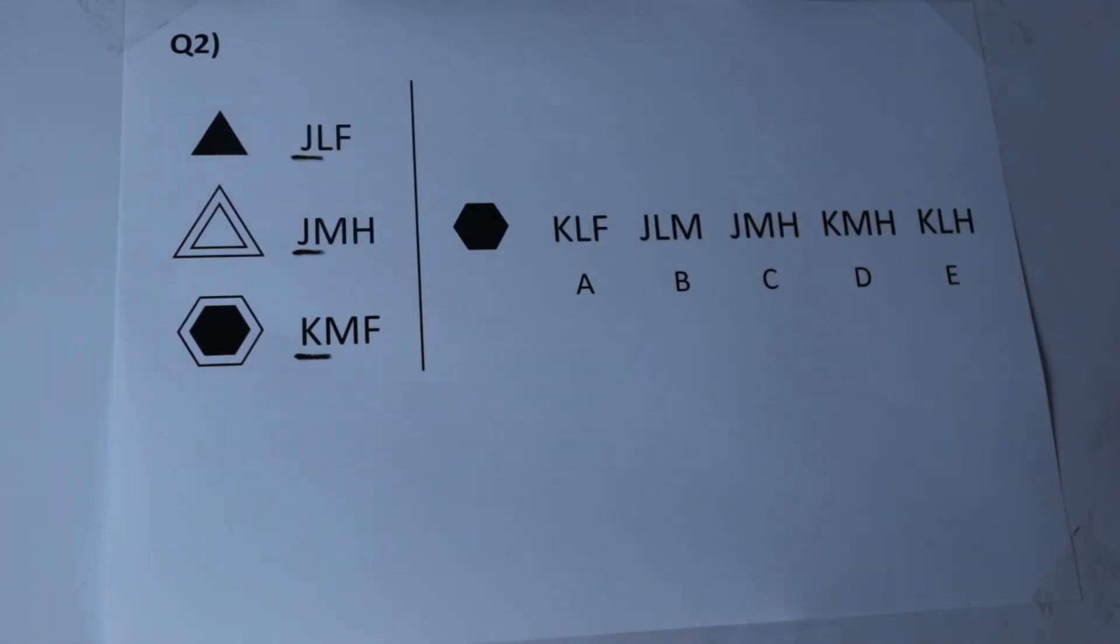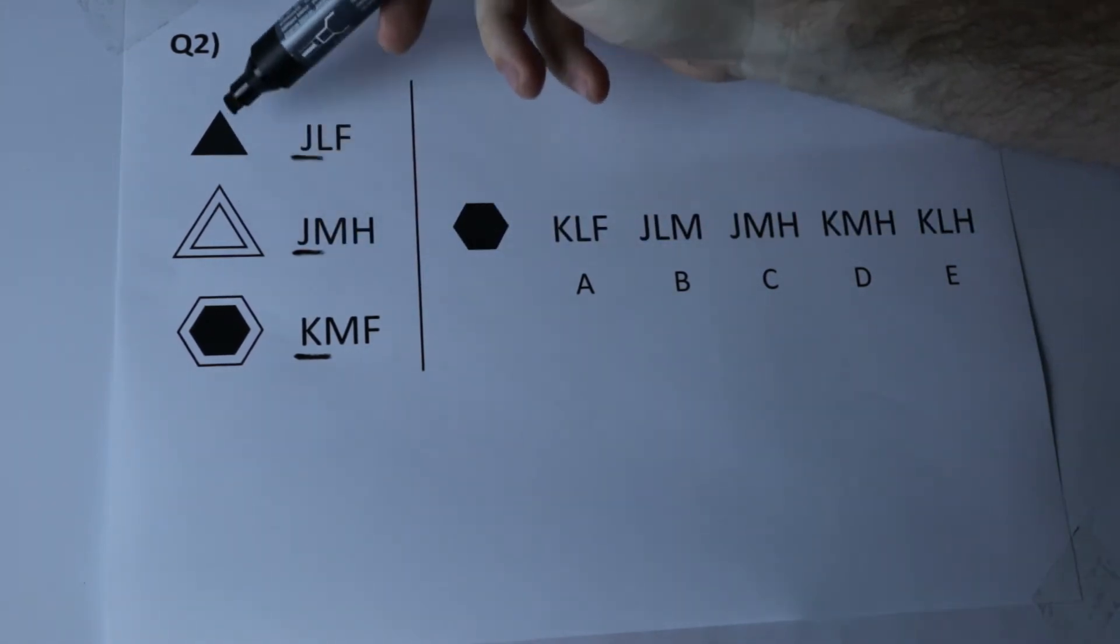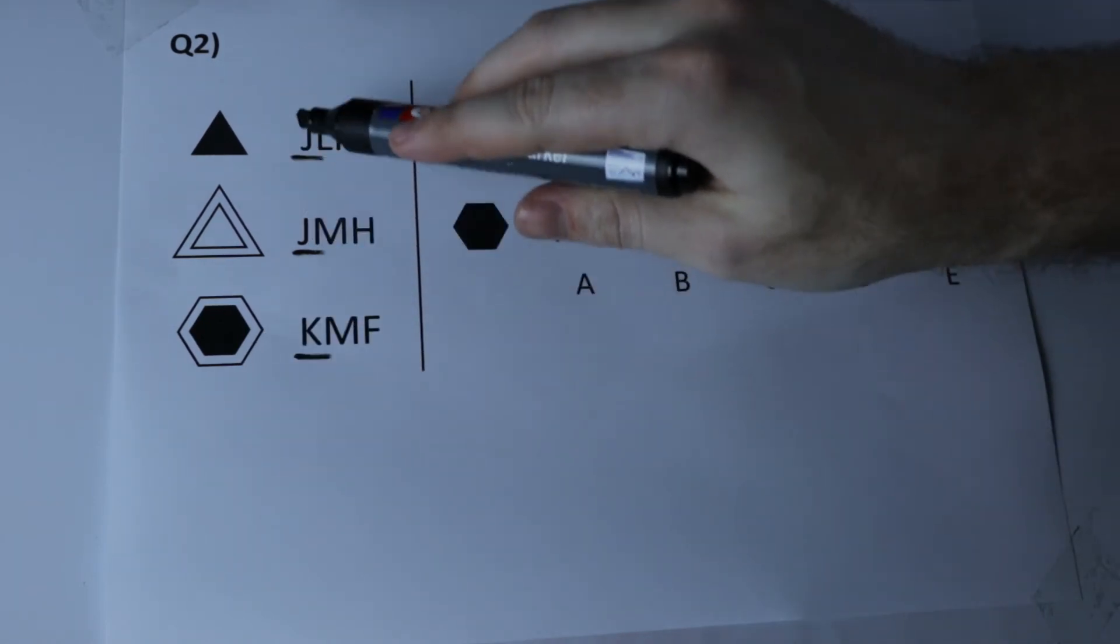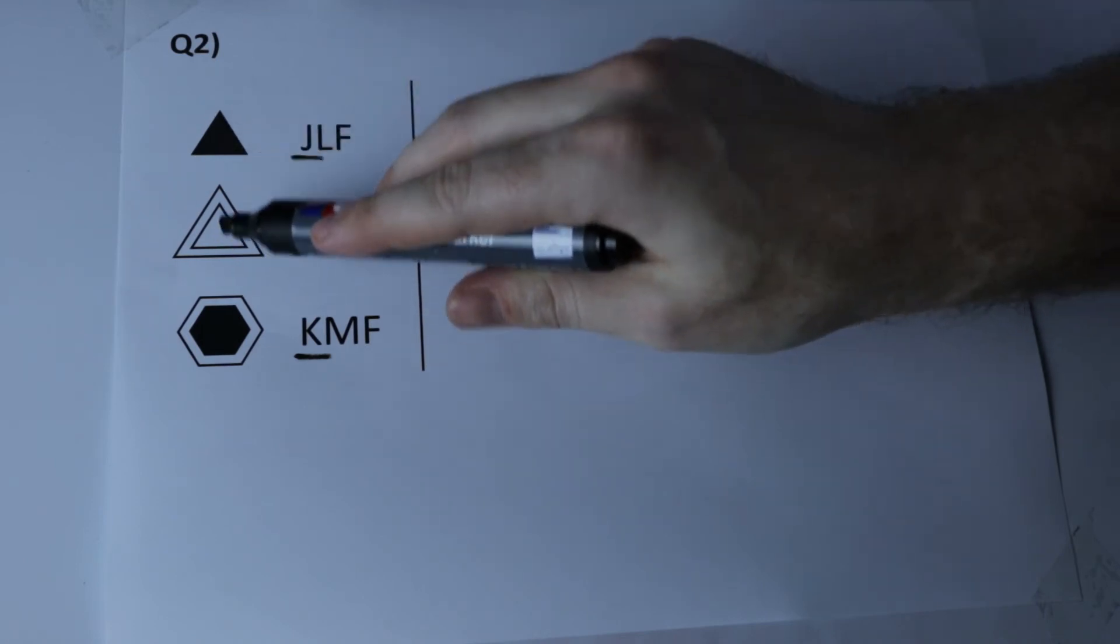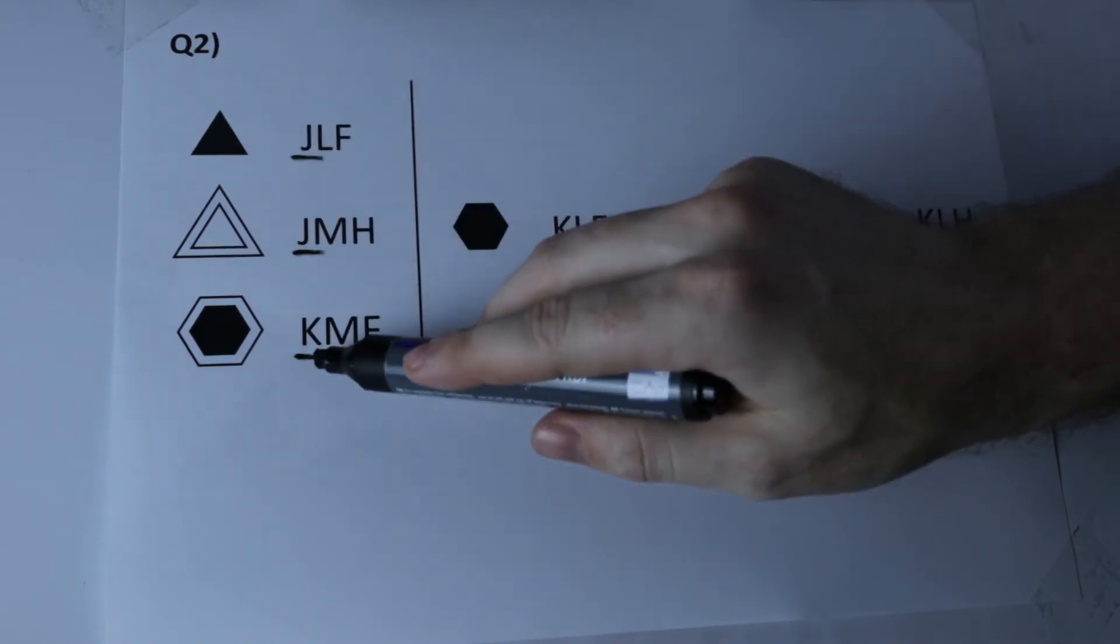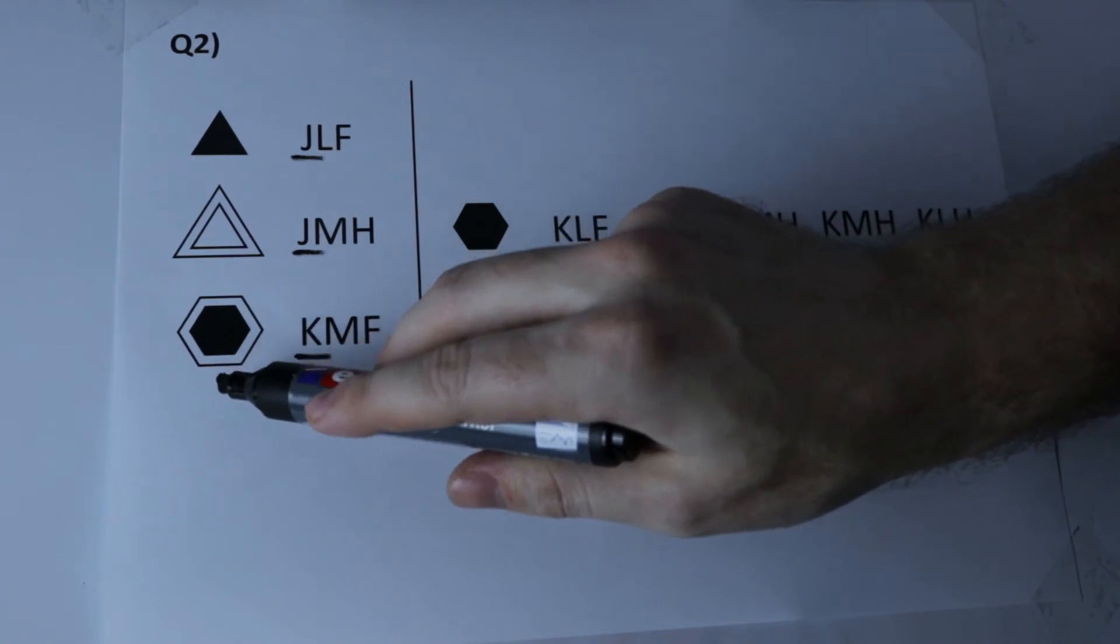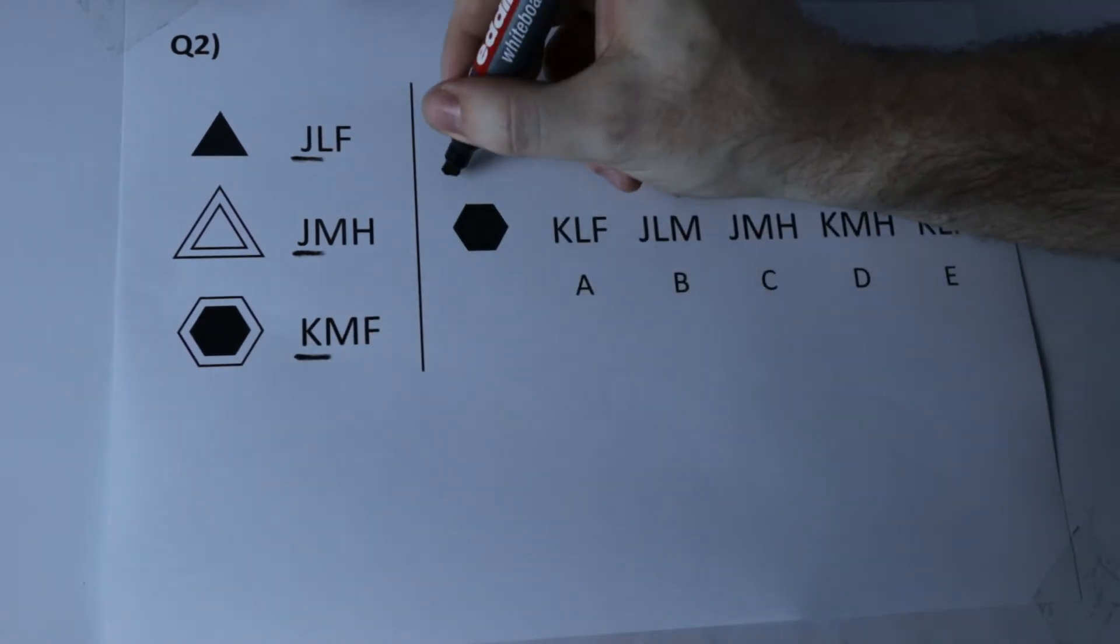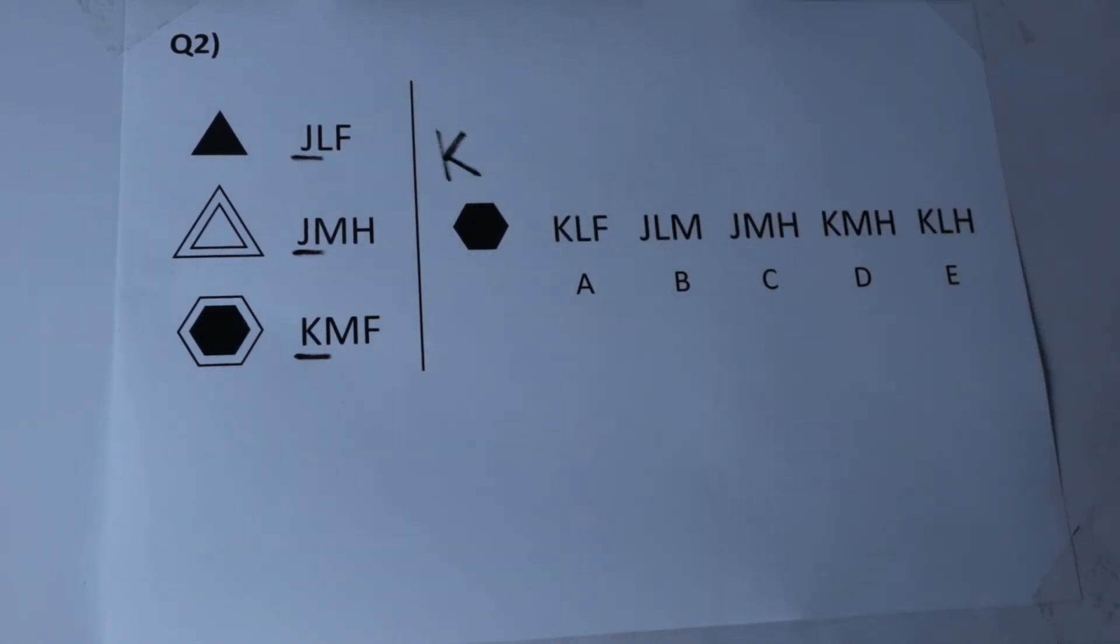And what we need to ask ourselves is what's the same about these two shapes which is different about the bottom one. Now the only thing J could represent here that's the same is that they're both made up of triangles. So J must represent triangles and K therefore must represent a hexagon. If we look at our shape on the right we see it's a hexagon and we can write in straight away the letter K.